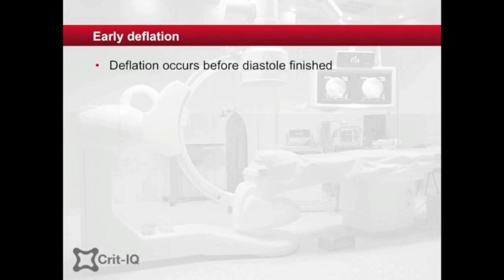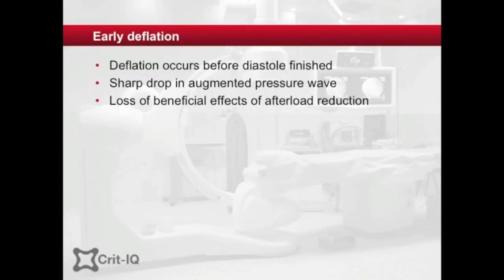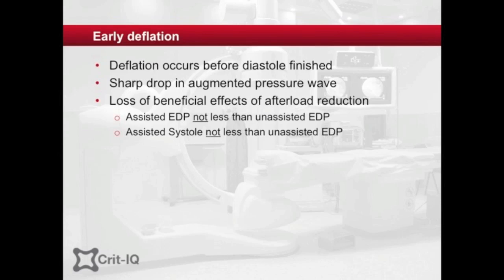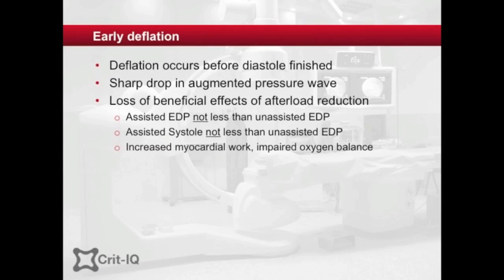Early deflation is when the balloon is incorrectly deflated during diastole. In this case, the waveform will display a sharp drop following diastolic augmentation rather than the usual gentle diastolic decay curve. This results in a loss of the beneficial reduction in afterload and left ventricular workload, visualized as an assisted end diastolic pressure and assisted systole that are not lower than the unassisted end diastolic pressure or the unassisted systole. The loss of afterload reduction increases left ventricular work and myocardial oxygen demand. Additionally, the negative pressure created by deflation of the balloon may cause coronary steal, where blood is effectively sucked back out of the vessels. Clinically, the patient may experience angina or neurological change.